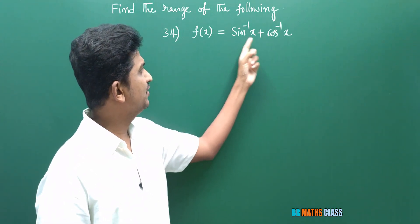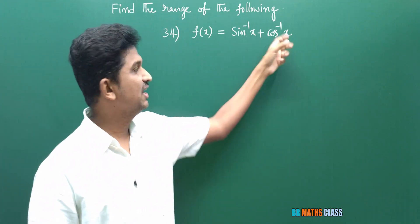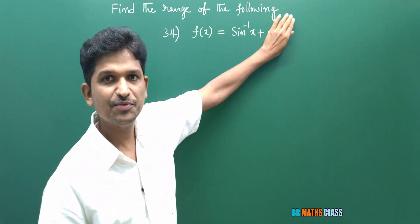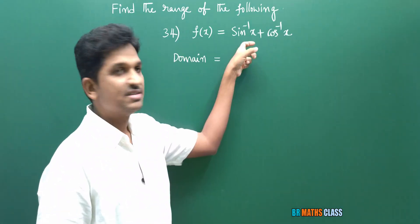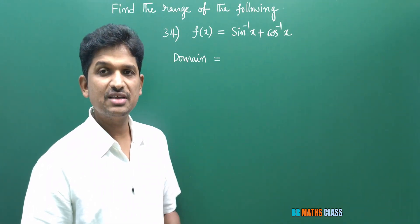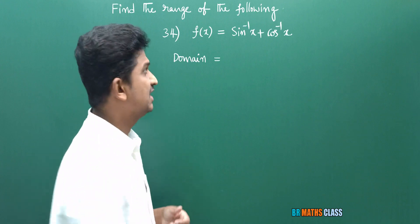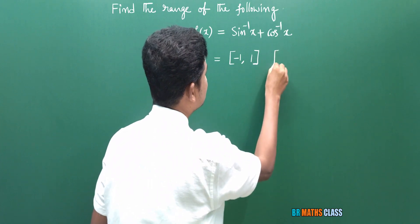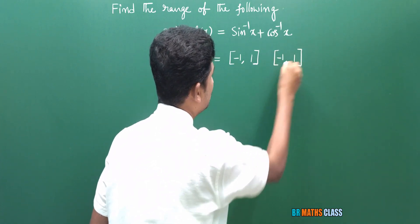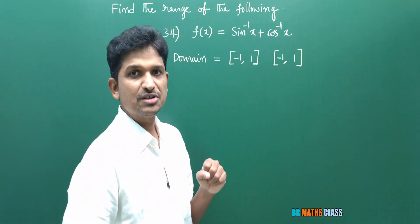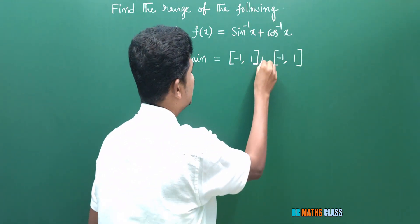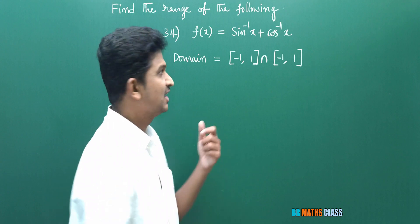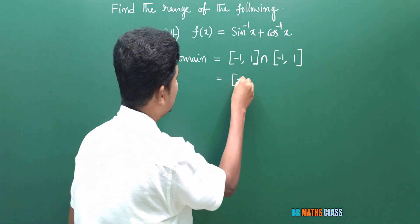This function is of the form g(x) + h(x). To calculate the domain, I'll find the domain of each part and then take their intersection. The domain of sin⁻¹x is the closed interval [−1, 1]. The domain of cos⁻¹x is also the closed interval [−1, 1]. The intersection of these two is the closed interval [−1, 1].